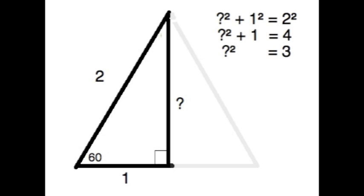But Pythagoras makes it easy as A, B, C, so the missing side is the root of three.